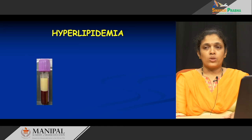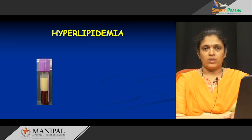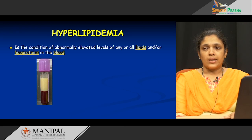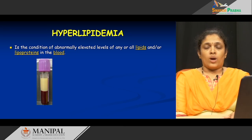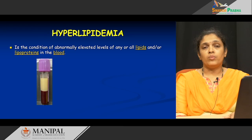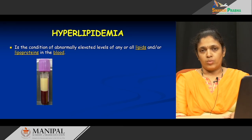If you look at a serum sample in which there is hyperlipidemia, the topmost layer of the vacutainer is milky, indicating something abnormal in lipid metabolism. There is excess chylomicrons, which indirectly means excess triacylglycerol. Hyperlipidemia refers to conditions of abnormally elevated levels of any or all lipids or lipoproteins in the blood.